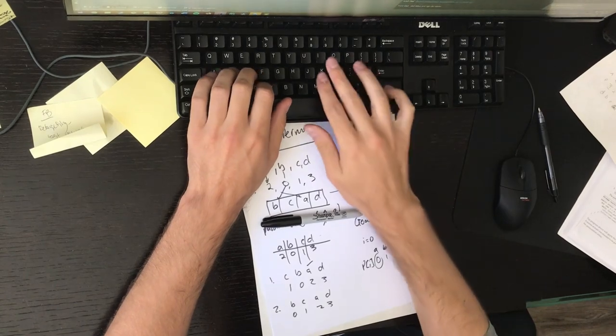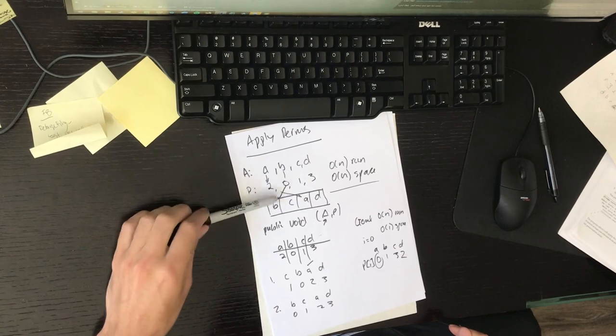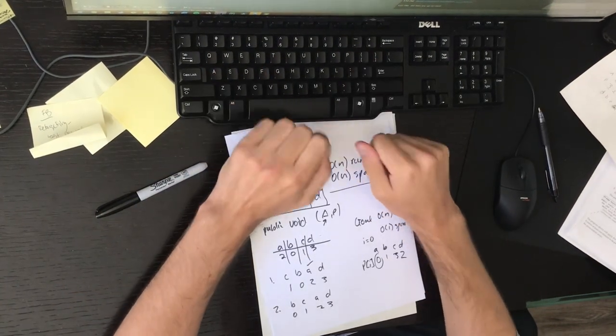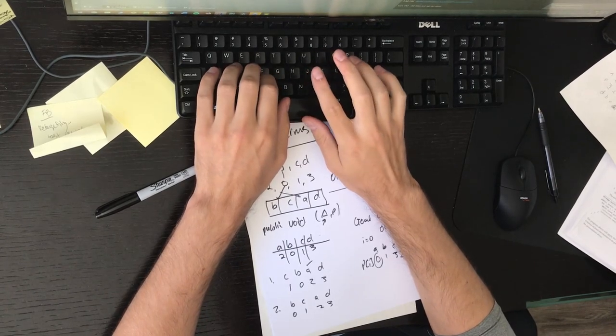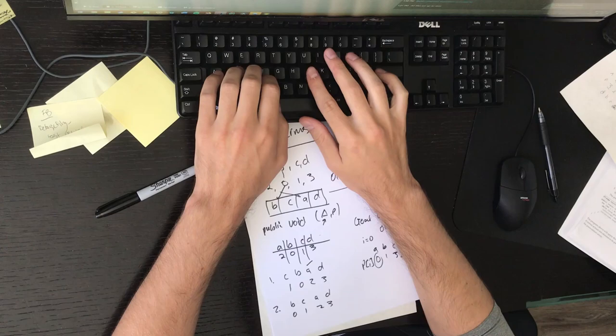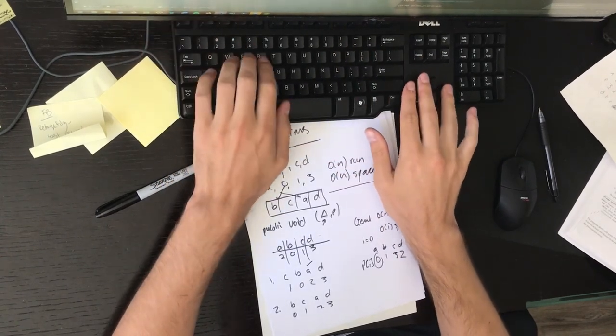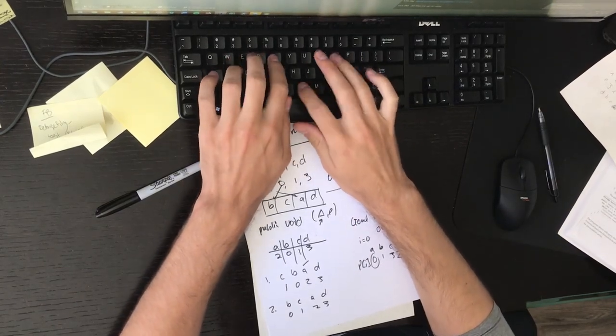If it doesn't, then what do we need to do? We need to swap. So collections dot swap. And what were we swapping? Both of these. So in our list of actual numbers, we'll be swapping I and P dot get at I. And then we also need to update the list of the mapping. So same thing.